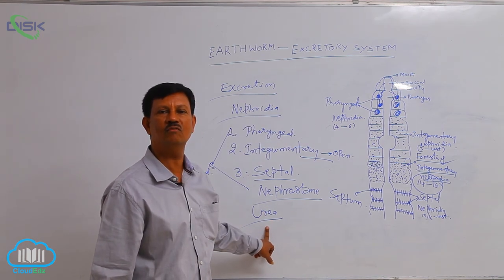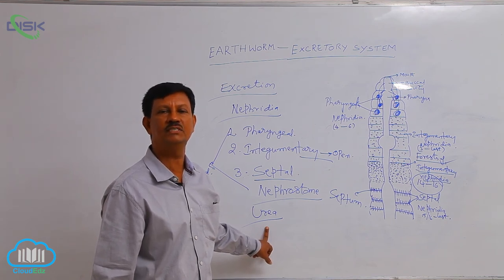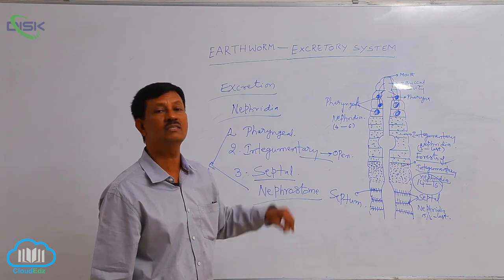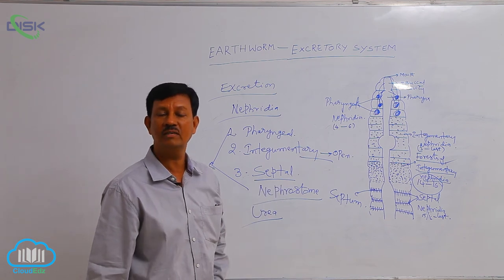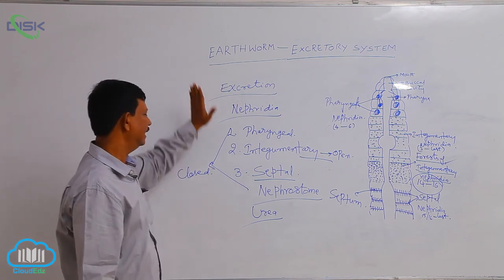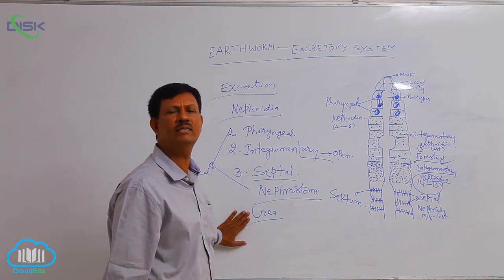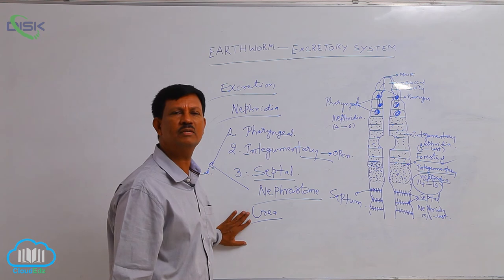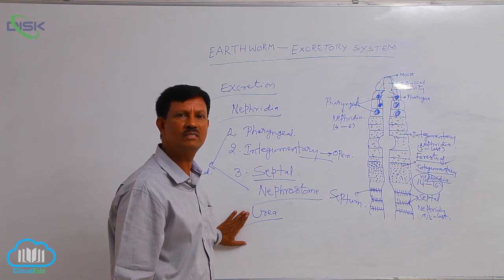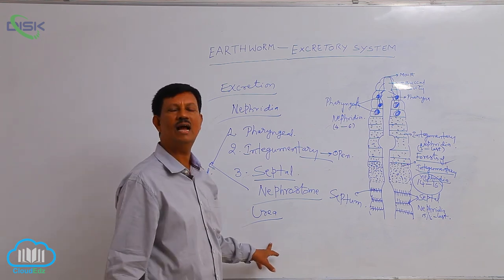Animals found in water, such as fishes, excrete ammonia, which is deadly poisonous. Birds and butterflies excrete uric acid and are known as uricotelic animals. Earthworm excretes mainly urea, though some quantity of ammonia is also present. Due to the large quantity of urea, earthworm is known as a ureotelic animal.